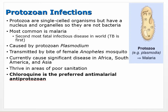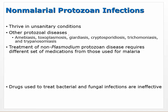The next group is protozoa. Protozoa are not bacteria — they have a nucleus and organelles, which makes them eukaryotic, and they're still single-celled. The most common protozoal disease is malaria, caused by a protozoan called plasmodium, transmitted by mosquitoes. It's the second most fatal infectious disease — tuberculosis is the first. Chloroquine is the preferred anti-malarial, though ATI didn't include it in this section.